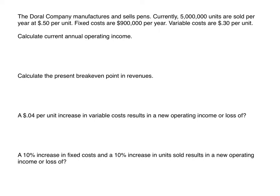The first question asks us to calculate the current annual operating income. Recall from our contribution margin income statement that sales minus variable cost equals contribution margin, and from contribution margin we subtract fixed cost to get our operating income.